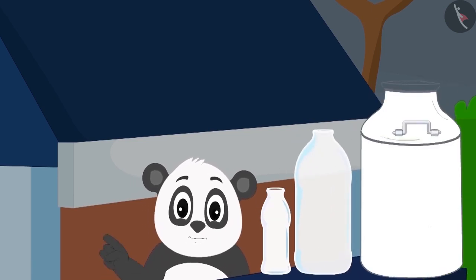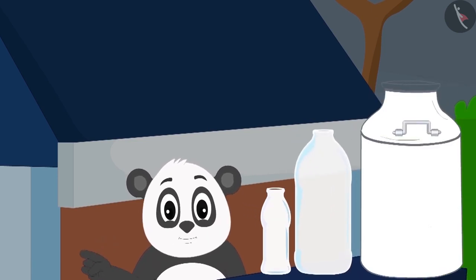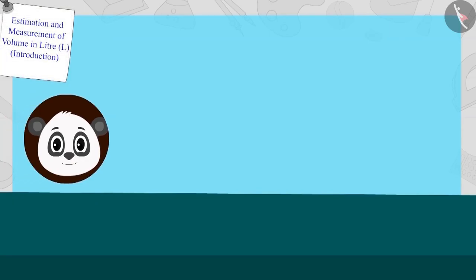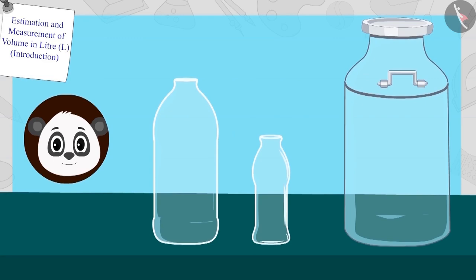By doing this, he will be able to sell milk to his customers very fast. Golu has bottles in two sizes and large cans like these.